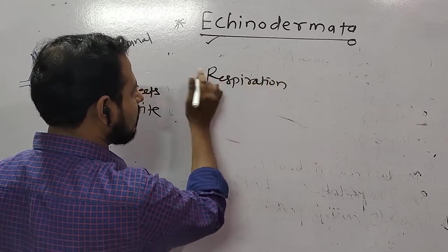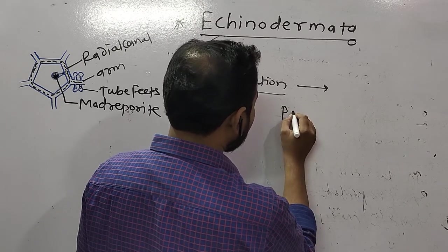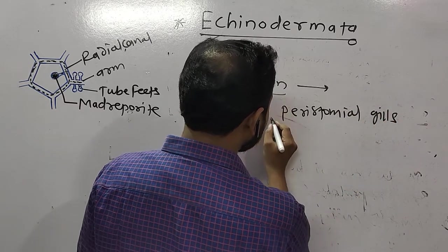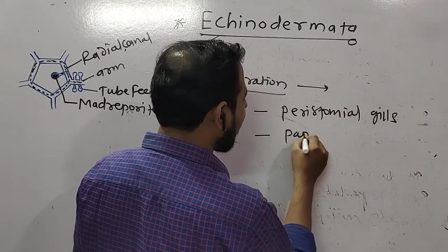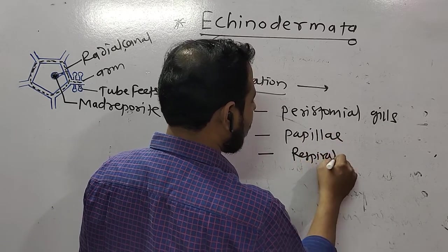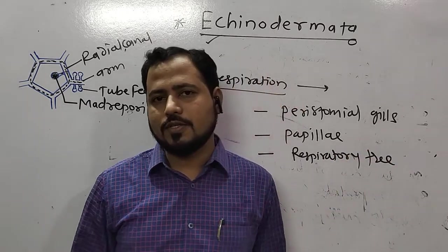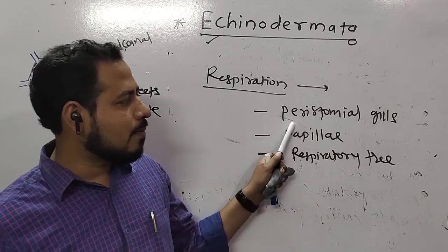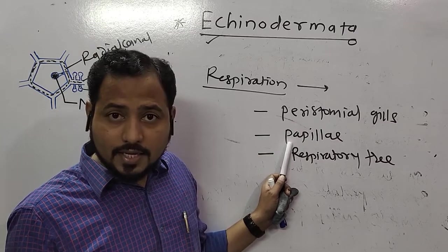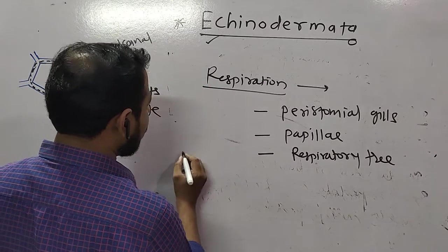As they are found in water bodies, respiration occurs through gills — specifically peristomial gills. Respiration in echinoderms occurs through peristomial gills, or through papillae, or through the respiratory tree. All these options are quite important in the case of Echinodermata.